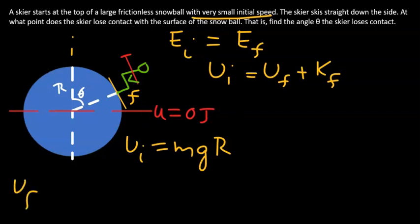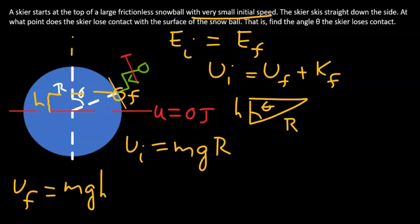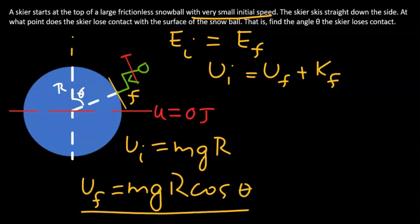Now what about Uf, the potential energy at that point? To answer that we need to figure out that vertical distance, namely that distance. So we have a right angle triangle, so this is R, this is h, and this angle here is theta. So the gravitational potential energy at that point is given by mgh, and h from this triangle can be determined to be R cosine theta. So that is the gravitational potential energy at the final point.